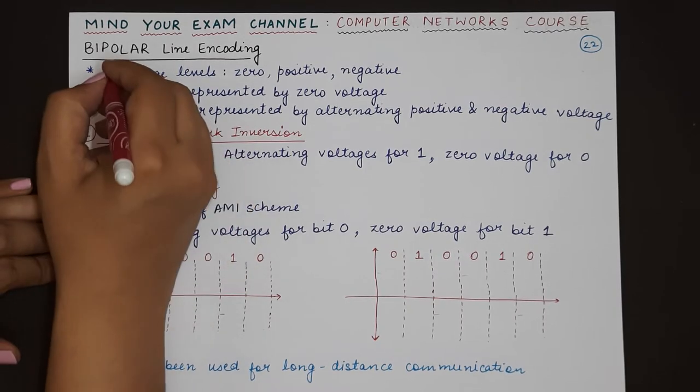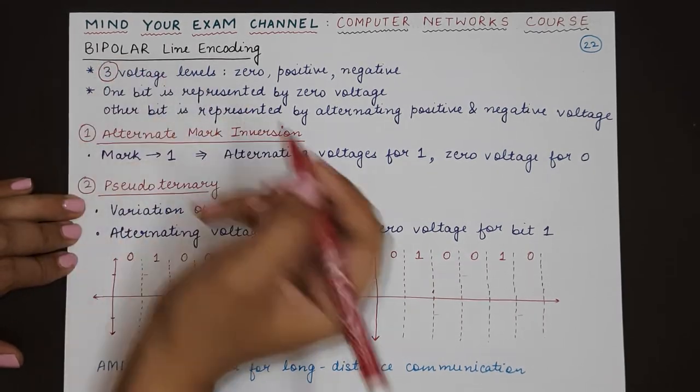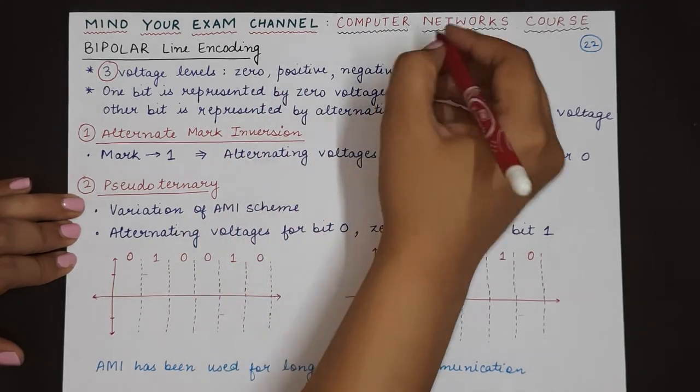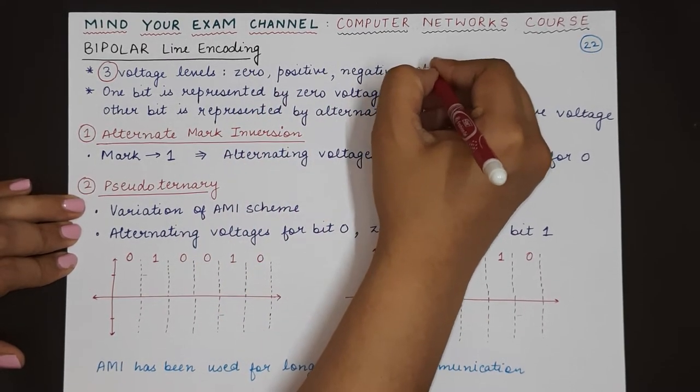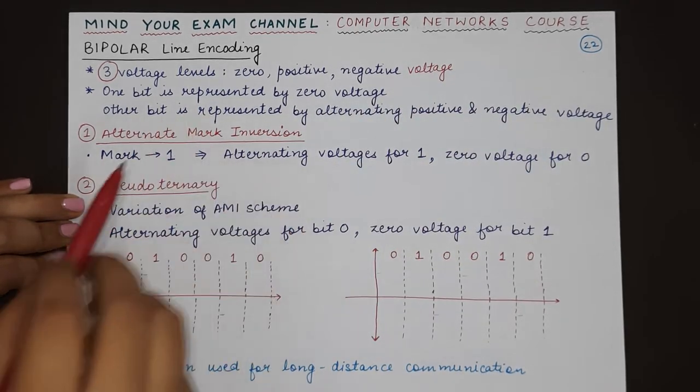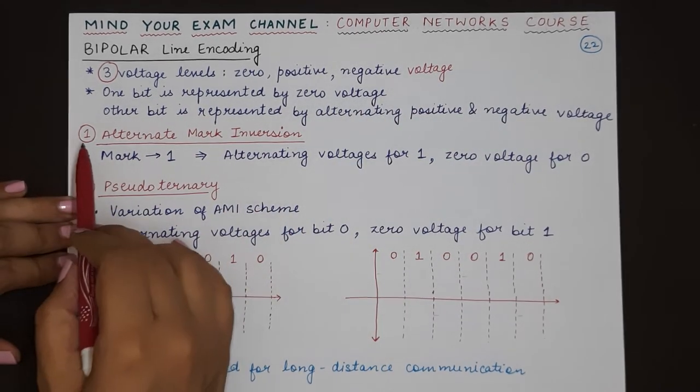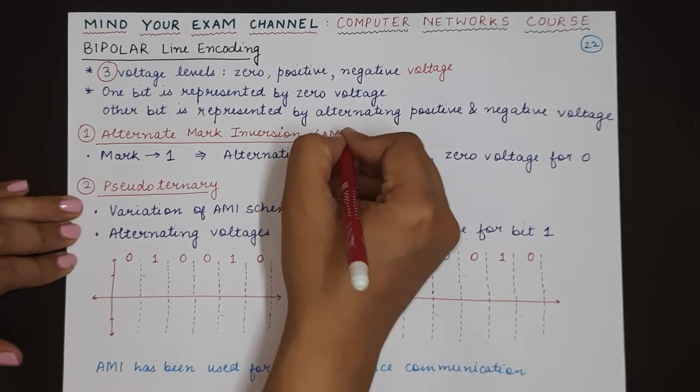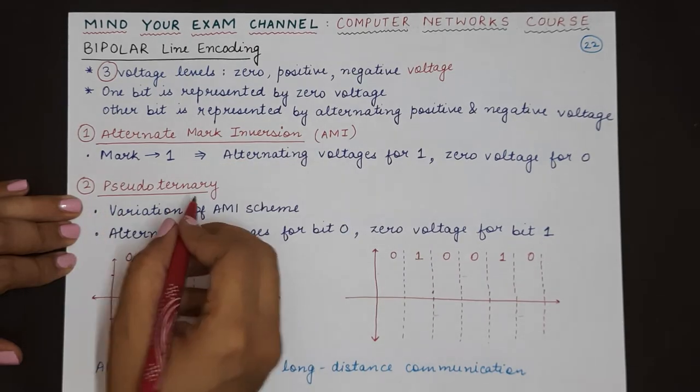Bipolar consists of three voltage levels: zero voltage, positive voltage, and negative voltage. These voltages will have two variations. The first is AMI or Alternate Mark Inversion, and the second is pseudoternary.